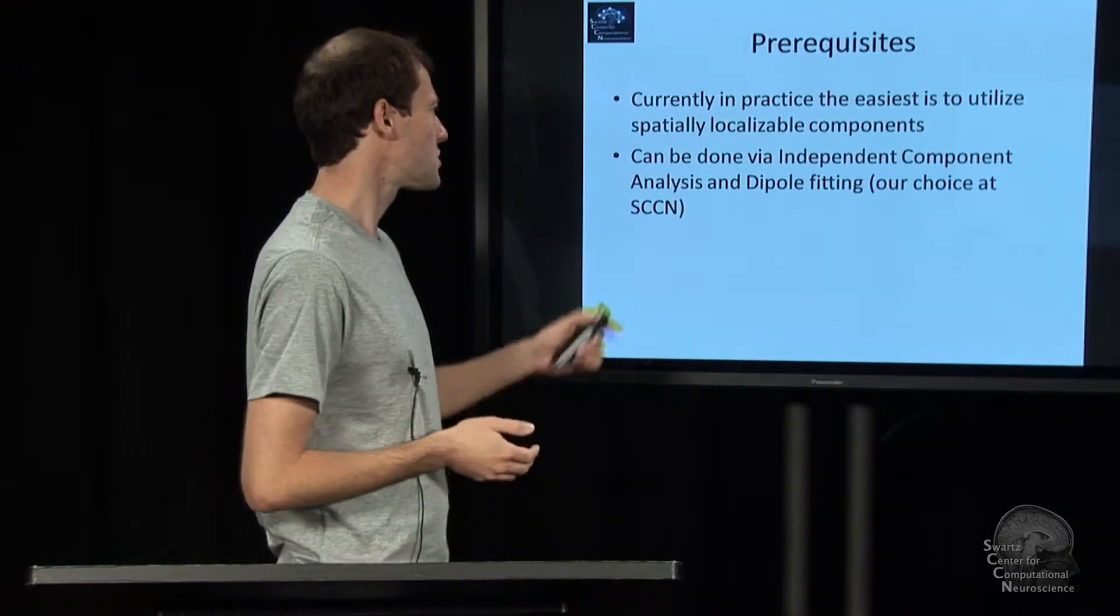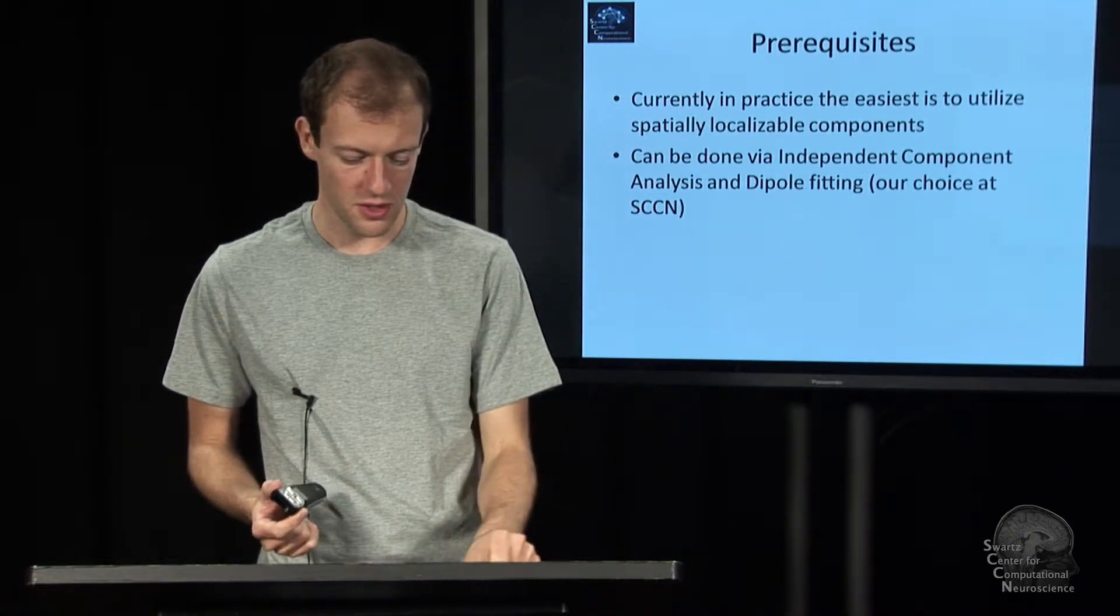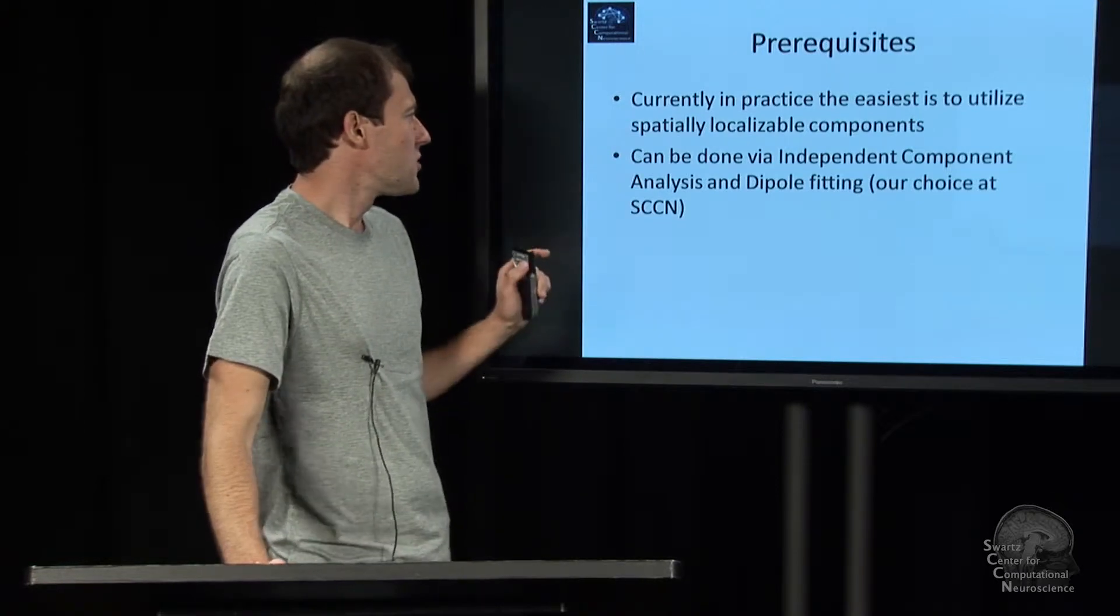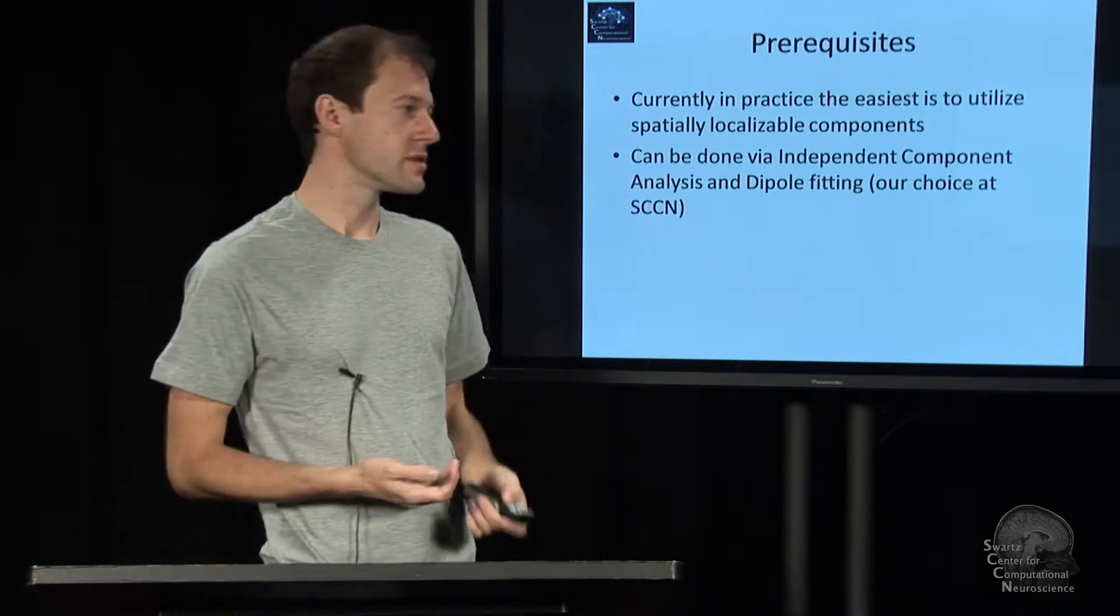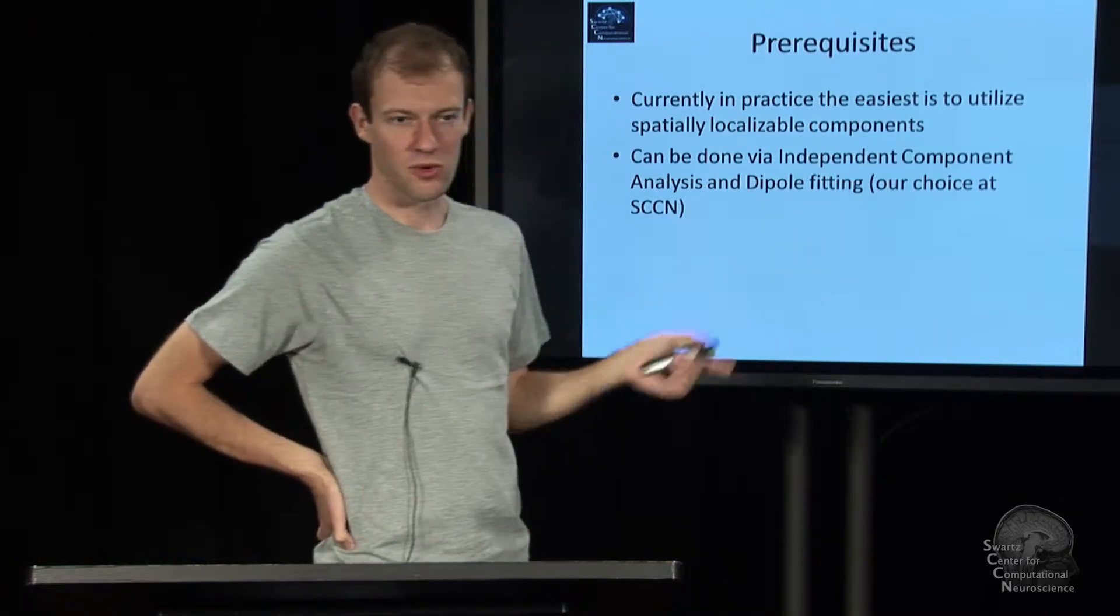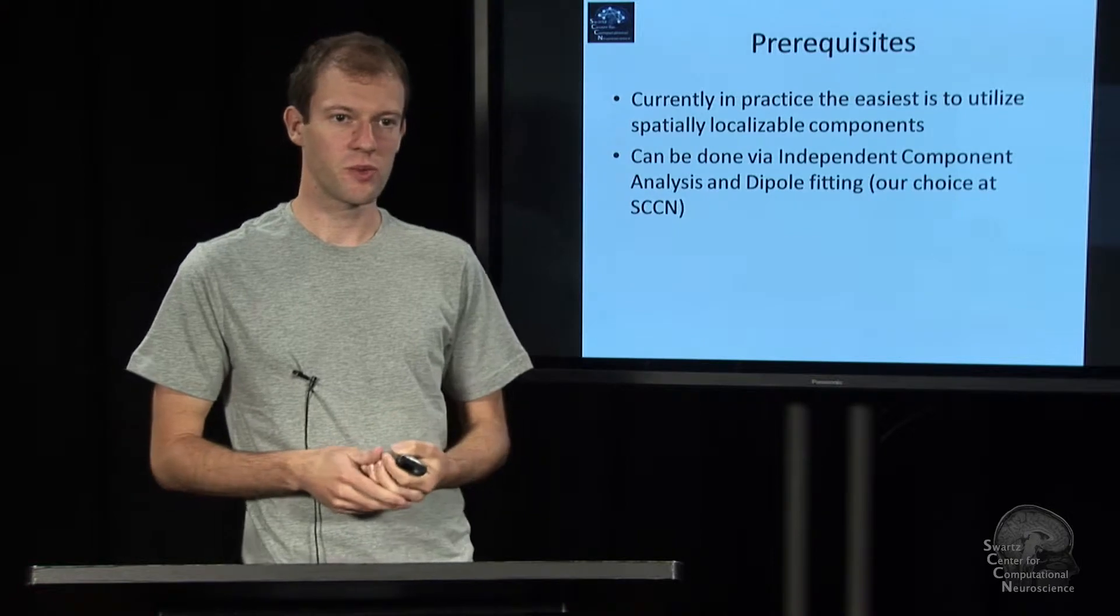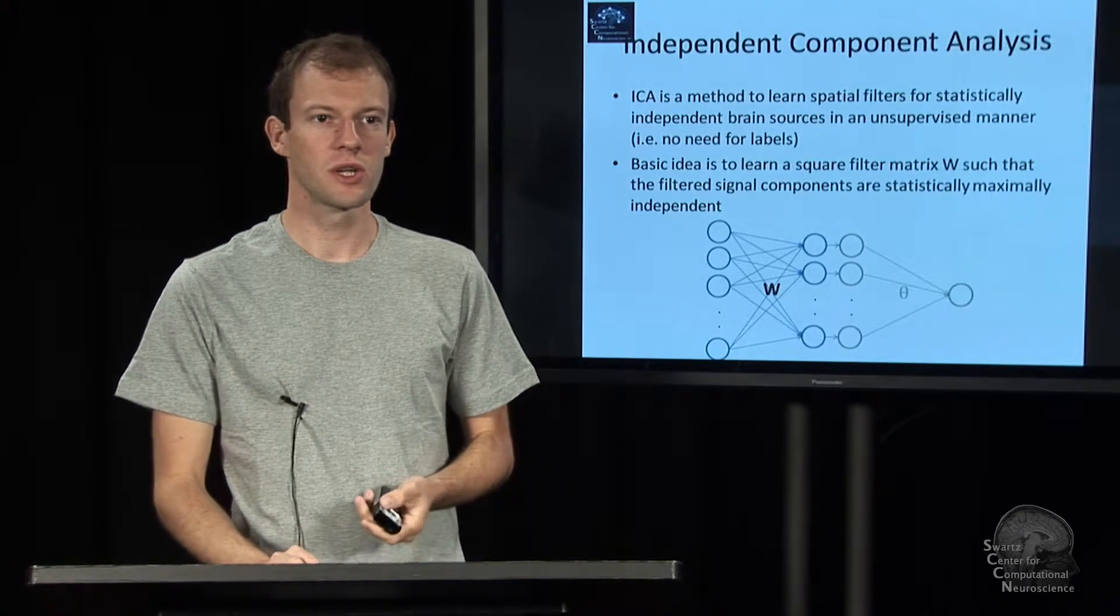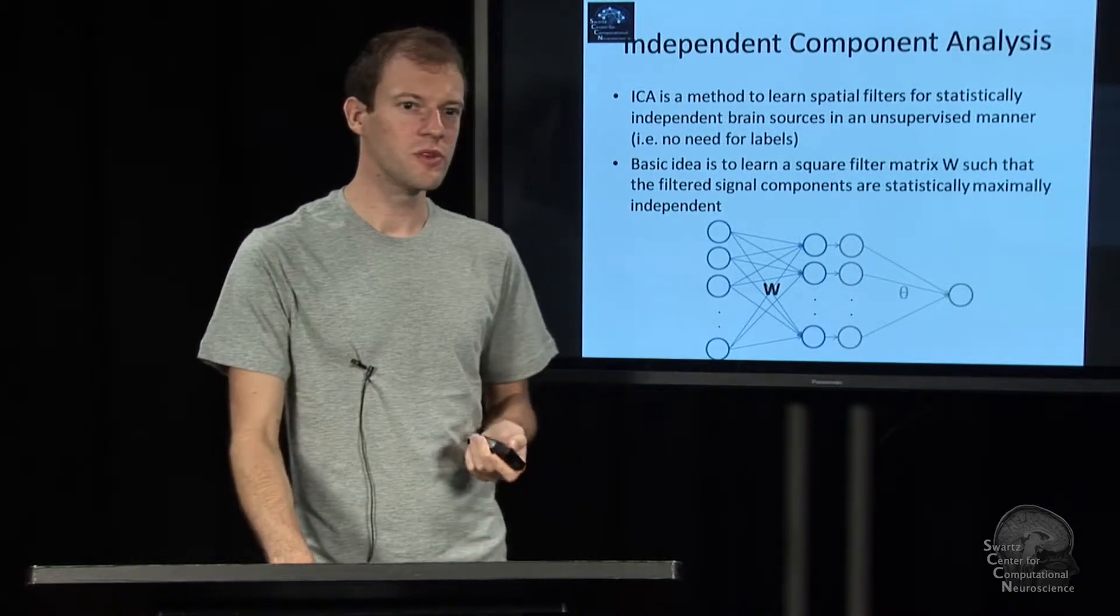The easiest one, it turns out, is a particular pathway that the Swartz Center has been spending years on refining. It's the idea of using components of the signal and building your model on top of these components which are themselves localized. This can be done by a combination of Independent Component Analysis, which gives you functionally distinct and spatially distinct components, and then fitting a dipole to each one, which gives you location. I'll show you quickly how that works and connect to the previous stories we've talked about.